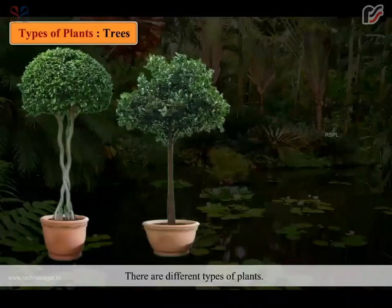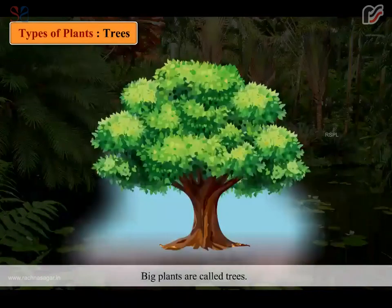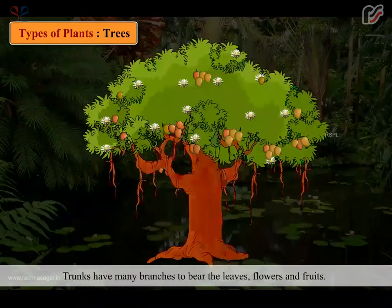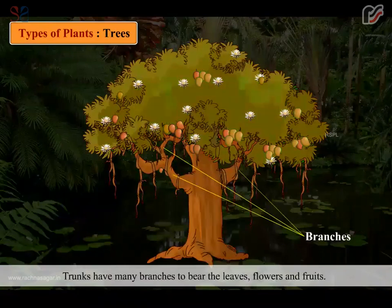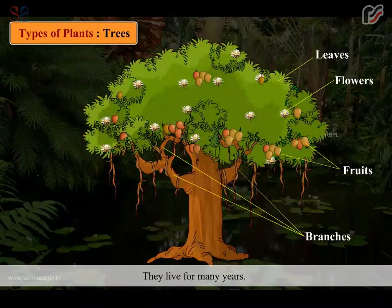There are different types of plants. Big plants are called trees. They have strong, thick and woody stems called trunks. They also have strong roots to hold them in the ground. Trunks have many branches to bear the leaves, flowers and fruits. They live for many years.